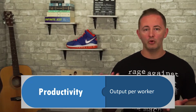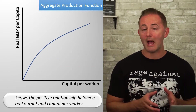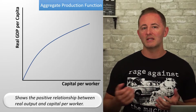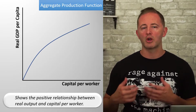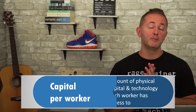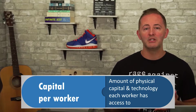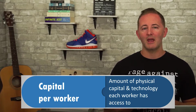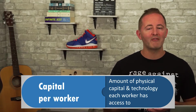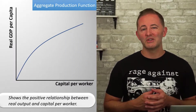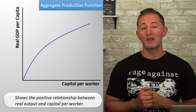Workers become more productive primarily in two ways: increases in technology and capital. The aggregate production function shows the relationship between real output and capital per worker — it's upward sloping, indicating a positive relationship between output and the amount of capital each worker has access to. Capital per worker refers to the amount of physical capital, tools, machines, and technology that each worker has access to. Those who already took micro probably noticed that this graph shows diminishing marginal returns when it comes to capital per worker.